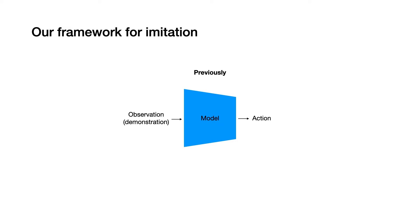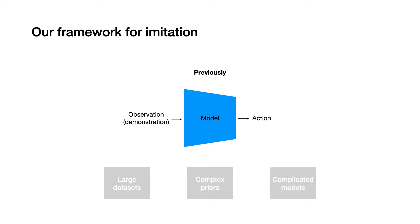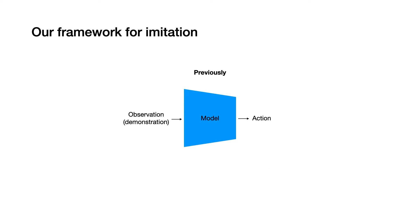This conflation meant the models require a lot of data, complex priors, or complicated models to perform well in real-world tasks. We, instead, break our model into two simpler pieces.